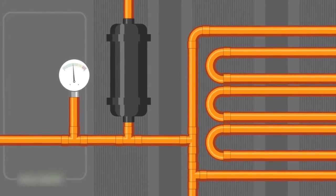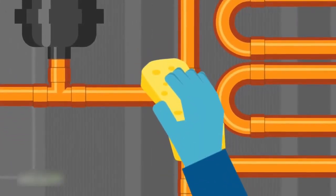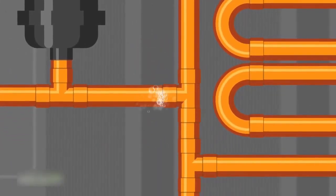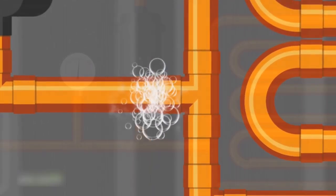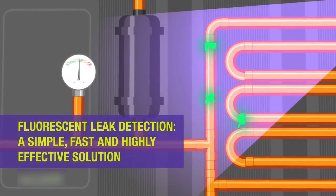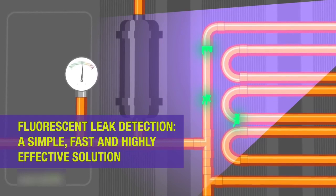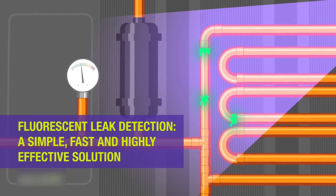There are many traditional methods for detecting leaks. Most require a lot of time and effort and aren't always 100% reliable. Fluorescent leak detection is a simple, fast and highly effective solution that will help complete your leak detection routine.